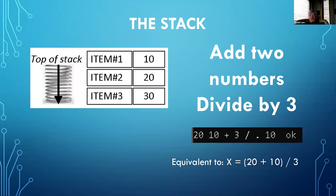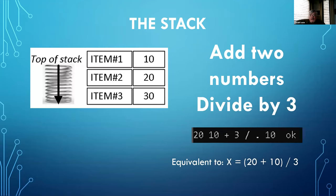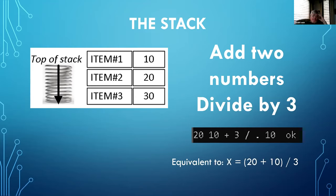Adding two numbers and dividing by three: we put 20 and 10 on the stack first, type '+', then 3, then divide, then dot to display the answer. You can use Forth interactively as a calculator while debugging hardware — it's equivalent to x = (20 + 10) / 3 in another language. That's postfix notation.